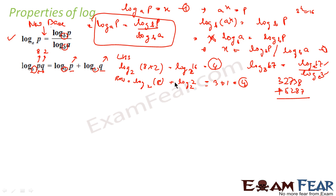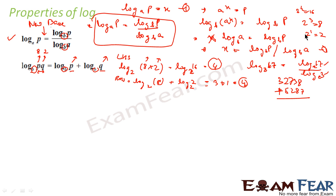I chose base 2 because it is simple to understand. p was taken as 8 and q as 2 because 8 is 2 to the power 3, so log 8 to the base 2 is 3. Similarly log 2 to the base 2 is 1, and log 16 to the base 2 is 4, since 2 to the power 4 equals 16. Thus LHS equals RHS.